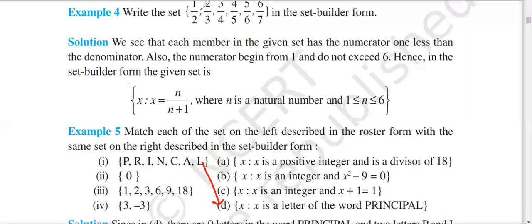Option (a): X is a positive integer and is a divisor of 18. The divisors are 1, 2, 3, 6, 9, 18.